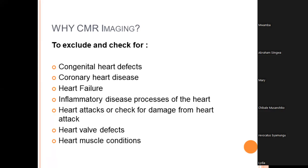When we talk about heart valve defects, we're referring to people who, instead of having three leaflets — trifoliate valves — end up having two, where two are fused to make one, resulting in what we call a bicuspid aortic valve (BAV). So a heart valve instead of having trifoliate leaflets has just two leaflets.